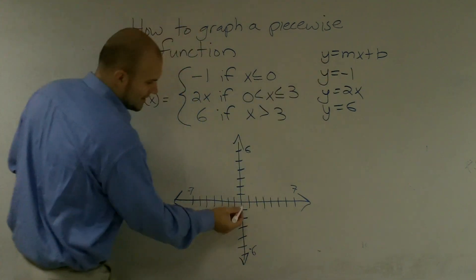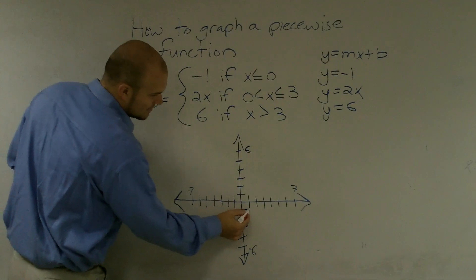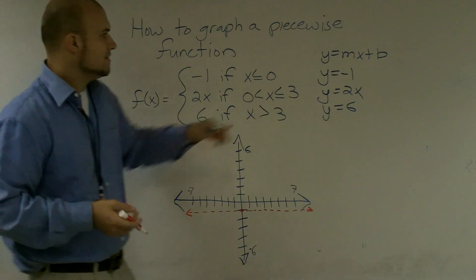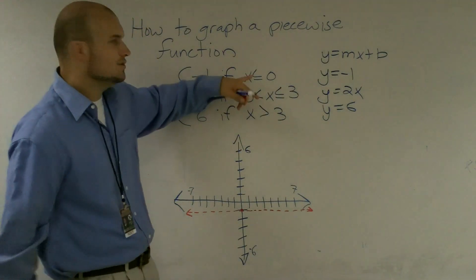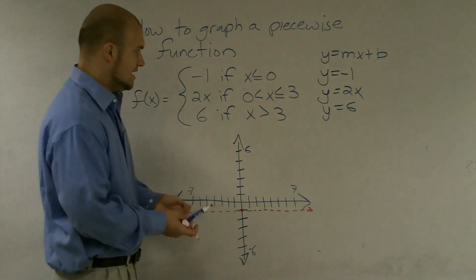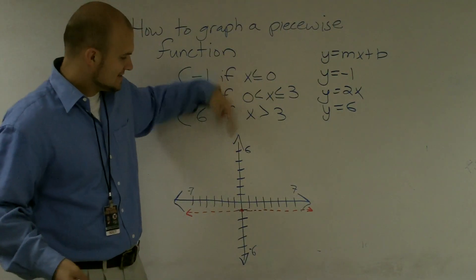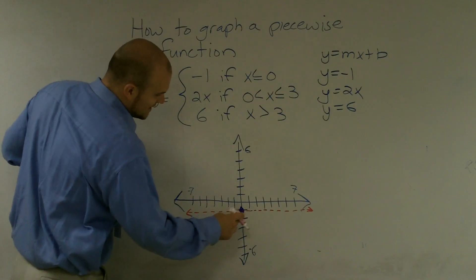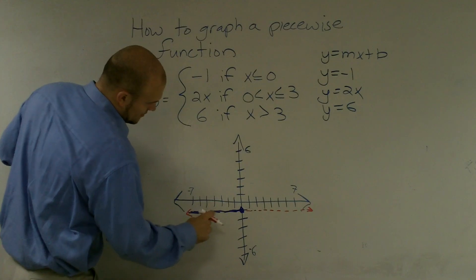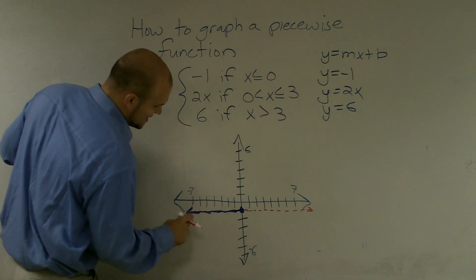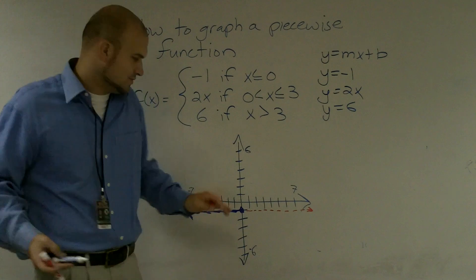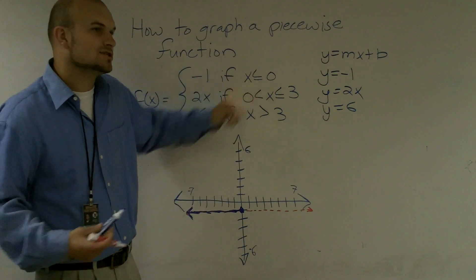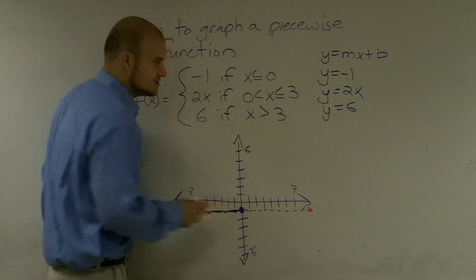So if I was going to graph this at negative 1, I'd go down to negative 1. Then I know it's only true when x is less than or equal to 0. Where x is 0 is right at the y-intercept. So I'm only going to shade in where it's true. We're not going to draw where it's false. It's only true when x is less than or equal to. Since it's equal to, it's going to be a closed circle.